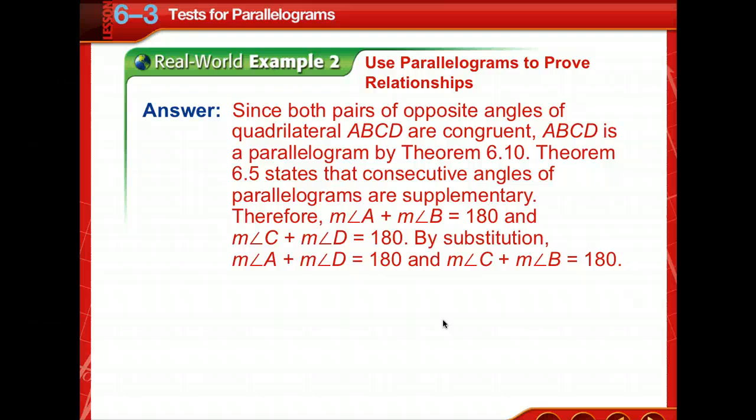Since both pairs of opposite angles of quadrilateral ABCD are congruent, ABCD is a parallelogram by theorem 6-10. Theorem 6-5 states that consecutive angles of parallelograms are supplementary. Therefore, the measure of angle A plus angle B equals 180, and also angle C plus angle D equals 180. So by substitution, angle A plus angle D equals 180, and angle C plus angle B equals 180.